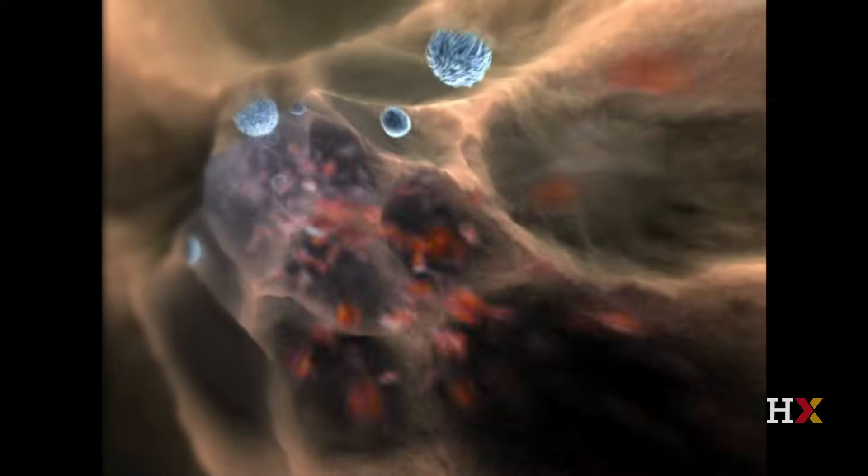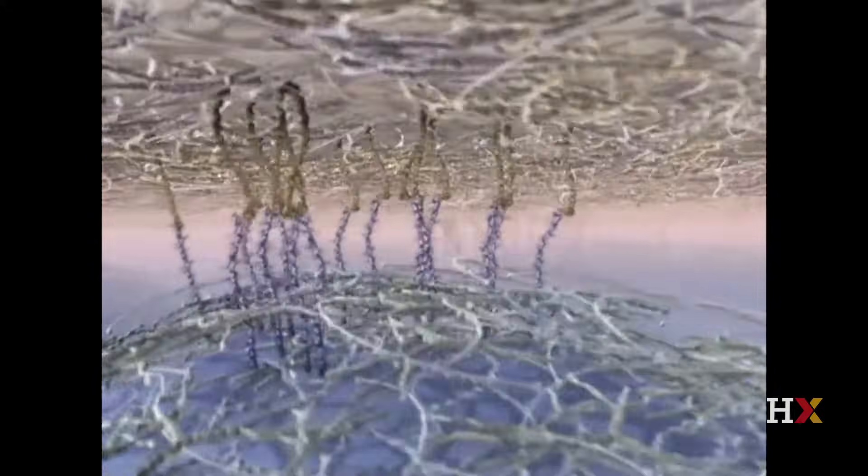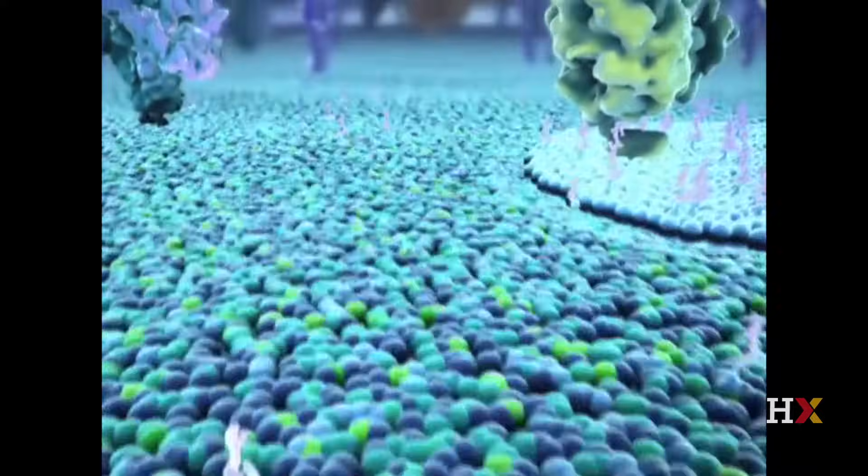Here we see cells flowing through the bloodstream, but let's focus on this rolling macrophage that sticks to the endothelial cells that line the blood vessels by adhering to proteins. It's almost like molecular velcro.